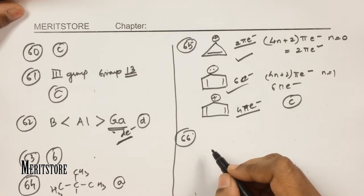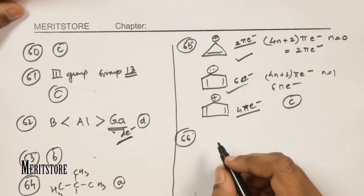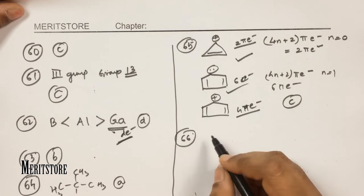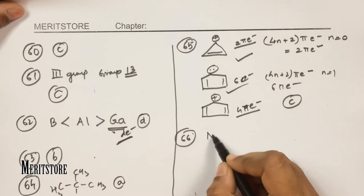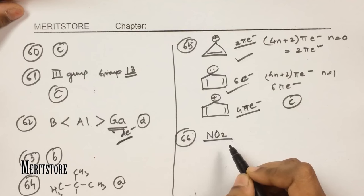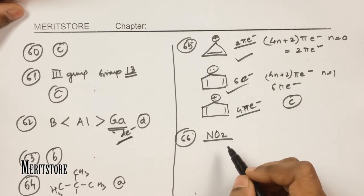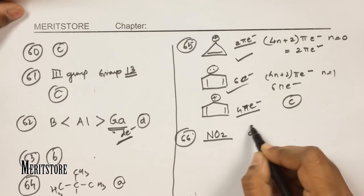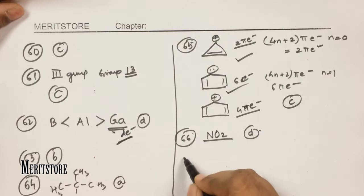Question number 66: photochemical smog is caused by which gas? Among carbon monoxide, carbon dioxide, ozone, and NO₂, NO₂ is the most prominent factor responsible for photochemical smog. Hence option D.